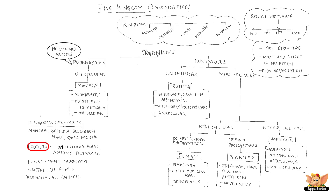Unicellular algae, amoeba, and paramecium are examples that fall under the kingdom Protista.